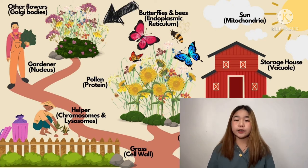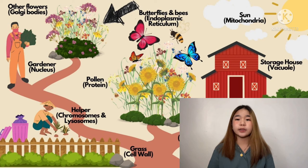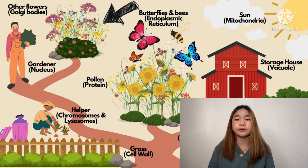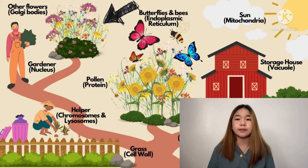Lastly, we have the Golgi bodies, or Golgi apparatus. In the cell, they are the ones who receive materials such as proteins and fats from the endoplasmic reticulum. It is like the other flowers in the garden — they are the ones who receive the pollen of another flower from the butterflies and bees that transport it.